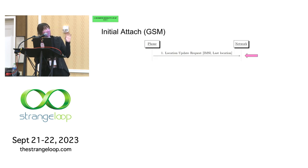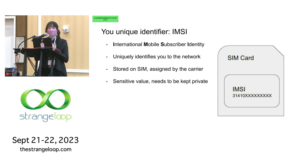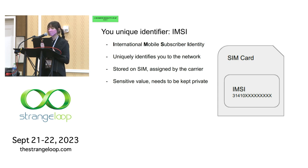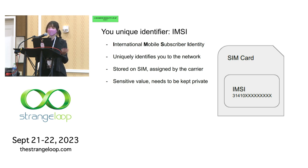The identification number it sends over is called the IMSI — International Mobile Subscriber Identity. It's your unique identifier, used to identify you to the network, stored on your SIM card, assigned by your carrier, and it's a sensitive value that needs to be kept private. We don't want radio traffic to be easily associatable with who it originated from, or be used to indicate that a certain user is or isn't in an area.